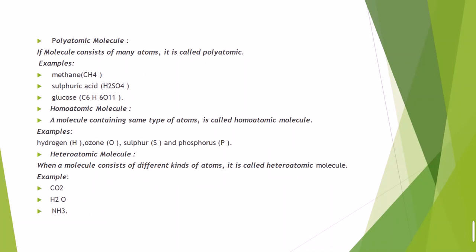Moving to polyatomic molecules — 'poly' means many, so a polyatomic molecule consists of many atoms. Examples include methane (CH₄), sulfuric acid (H₂SO₄), and glucose (C₆H₁₂O₆). Methane has four hydrogen atoms and one carbon, totaling five atoms. Sulfuric acid has one sulfur, four oxygen, and two hydrogen atoms. Glucose has six carbon, six hydrogen, and eleven oxygen atoms combining to form the molecule.